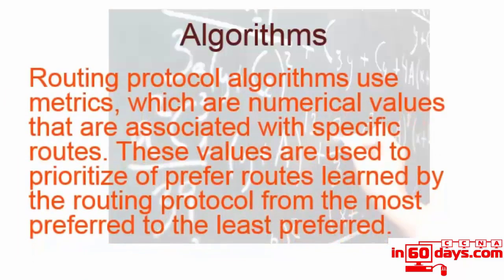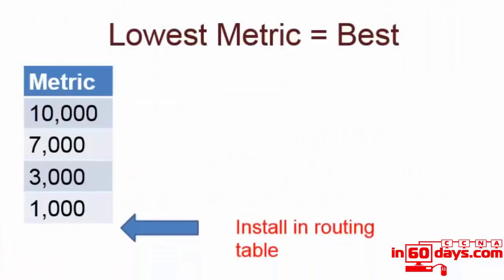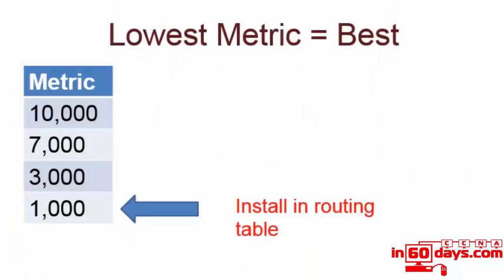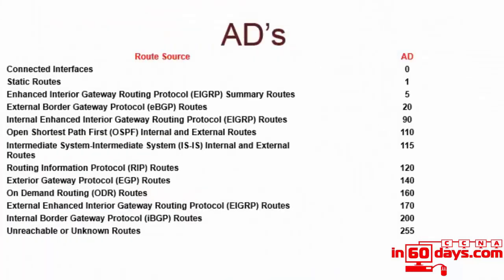Routing protocol algorithms use metrics, which are numerical values associated with specific routes. The protocols will prioritize routes and decide which one is most preferred or least preferred. The lowest metric is the best and will be the route installed in the routing table. There can be alternative routes with higher metrics stored by the router depending on the routing protocol. Here's the list of administrative distances that you need to know by heart for the exam.